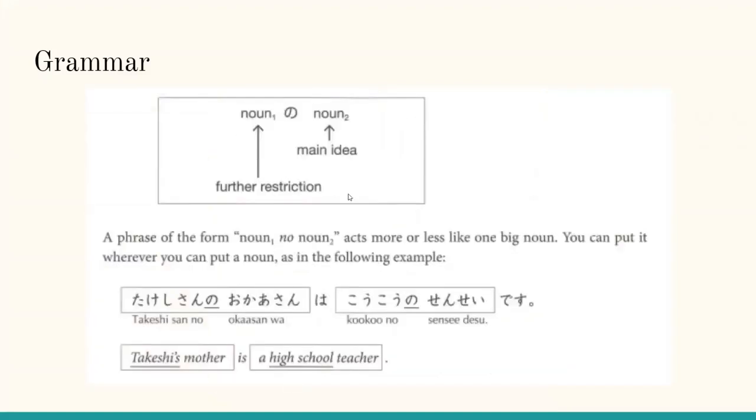Noun no noun, where the further restriction is the first noun and the main idea is the second noun. A phrase of the form noun no noun acts more or less like one big noun. You can put it wherever you can put a noun, as in the following example: Takeshi-san no okaasan wa koukou no sensei desu, which means Takeshi's mother is a high school teacher.